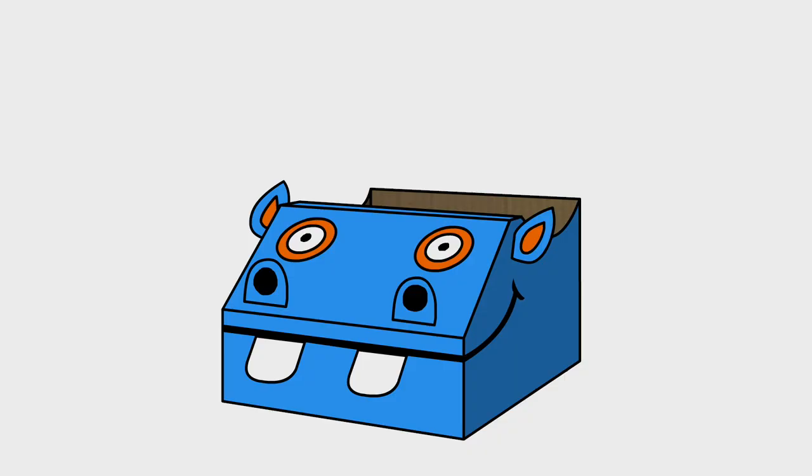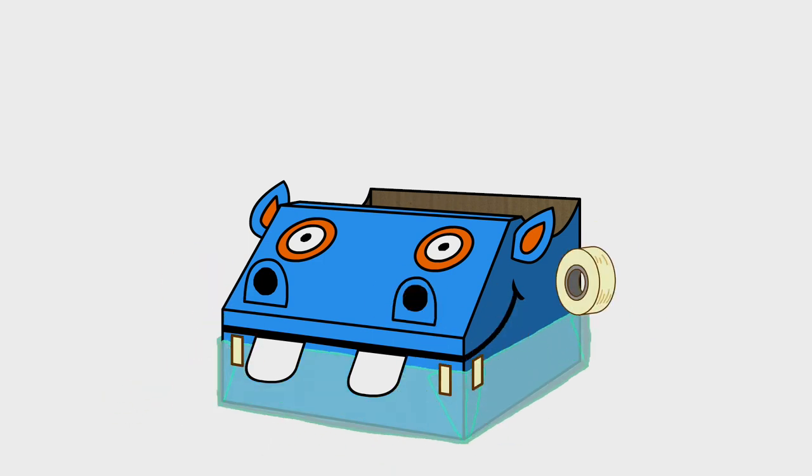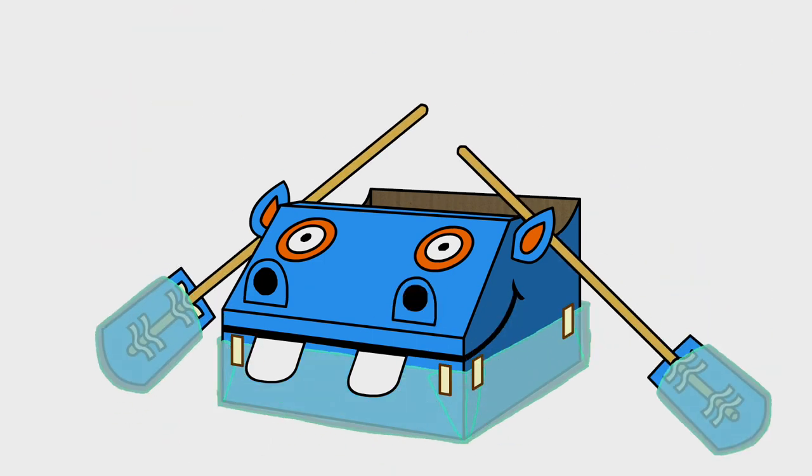You can also turn your hippo into a boat. Put some plastic underneath the hippo, then tape it up to the sides. Find a pair of oars and go for a paddle.